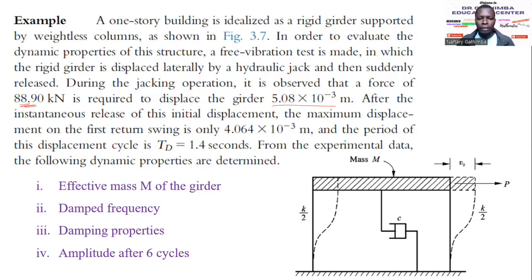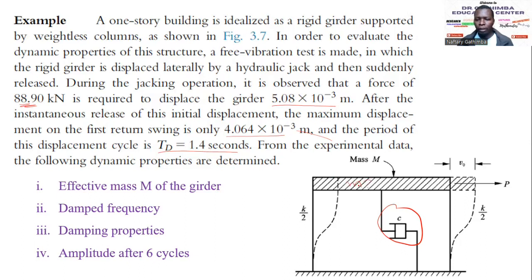A static displacement of 5.08 millimeters is observed. After the instantaneous release, the maximum displacement of the first return swing is measured, showing a reduction in amplitude. The initial displacement was 5.08 mm and after one swing it is 4.064 millimeters, indicating damping. The damped period T_d is 1.4 seconds. From this information, we need to determine: the effective mass of the girder, the damped frequency ω_d, and the damping properties.